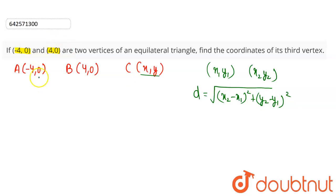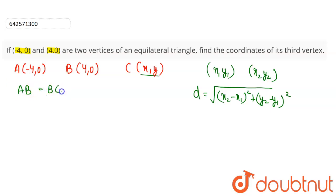Since these are the coordinates of an equilateral triangle, the distances between the sides are all equal — that is, distance AB = distance BC = distance AC. We will start by using AC = BC.